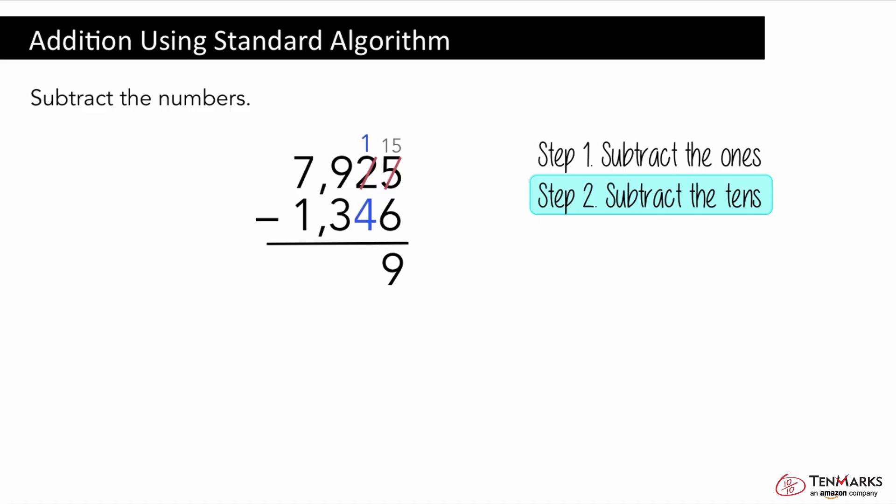We don't have enough tens to subtract from but we have nine hundreds. We can trade one of the nine hundreds for ten tens. Now we only have eight hundreds left. But we have ten new tens to add to the one ten. So we have eleven tens now.